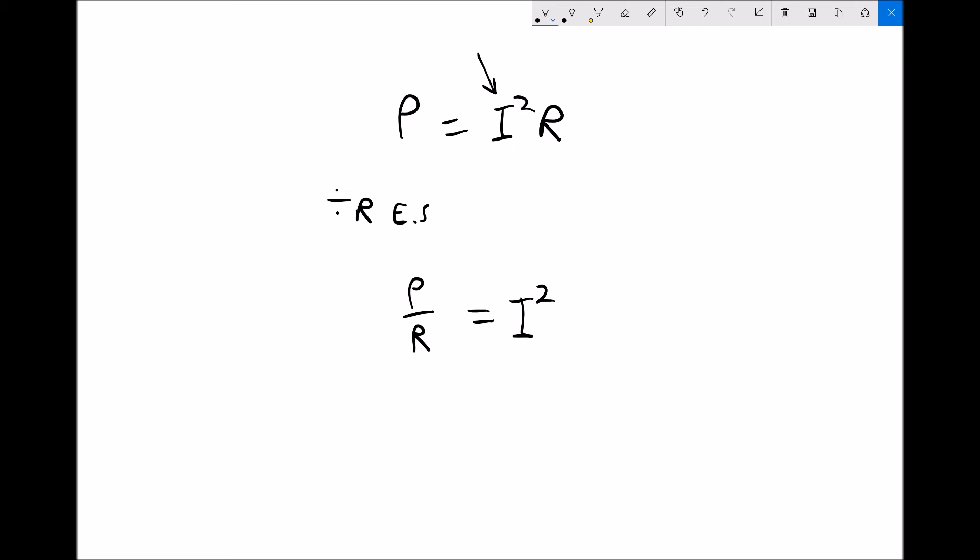Now what you can see here is the thing that we're trying to get on its own, i, is now being squared or raised to the power 2. So we need the inverse function of squaring, which is square rooting, and we're going to square root each side of our equation.